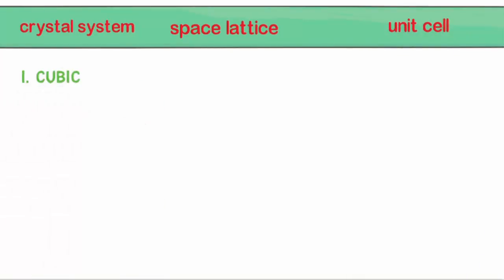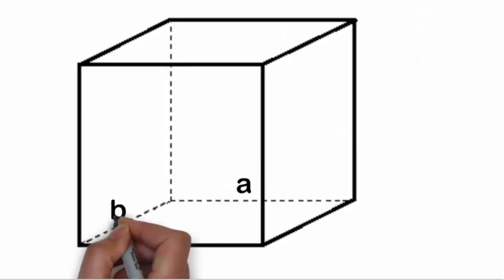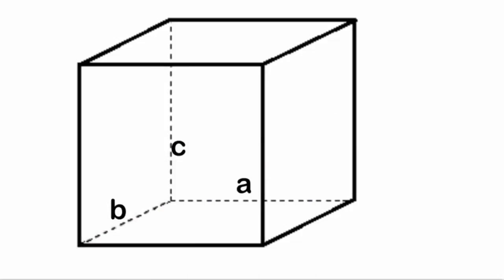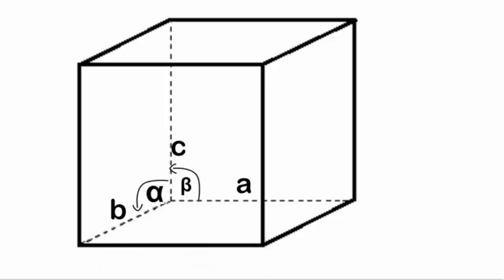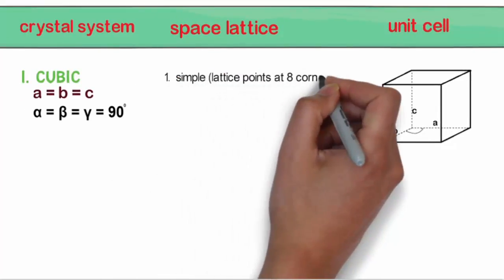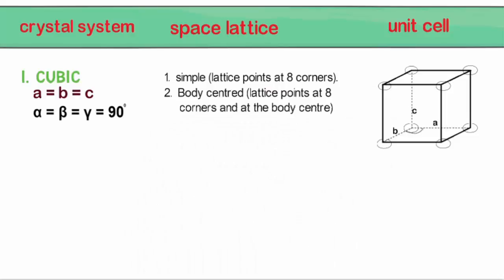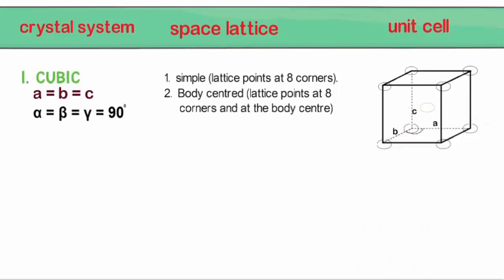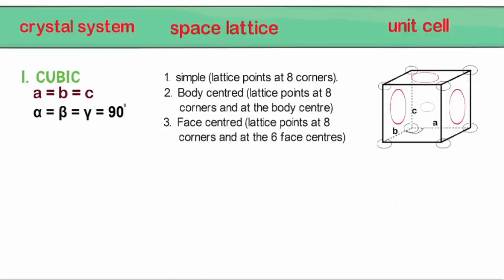The first one is called the cubic crystal system. Here all the edges of the unit cell are equal and the angle between any two sides are equal to 90 degrees. A, B and C are the three different edges of the unit cell, and alpha, beta and gamma are the angles between two edges — alpha is the angle between B and C, beta is the angle between A and C, and gamma is the angle between A and B. This crystal system can have three different space lattices: simple cubic where atoms are placed at 8 corners, body centered cubic where atoms are at 8 corners and also at the body center, and face centered cubic where atoms are at 8 corners and at the 6 face centers.